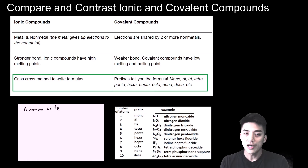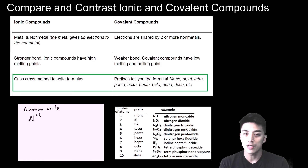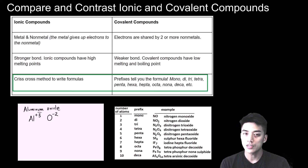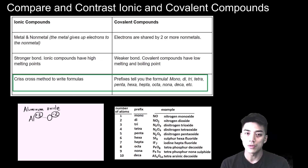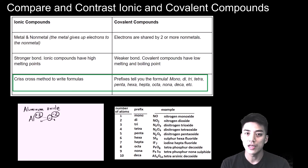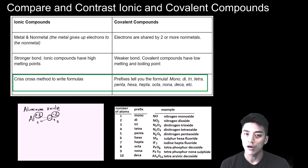For ionic compounds, you're going to rely on the crisscross method, which we discussed in the ionic compounds naming and writing formulas video series. So you will crisscross the charges, keep the name of the metal, and then change the ending of the nonmetal to -ide or -ite. For covalent compounds, it's different in that the prefixes will tell you how many there are.